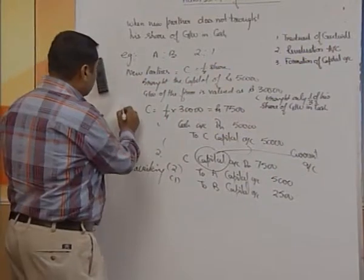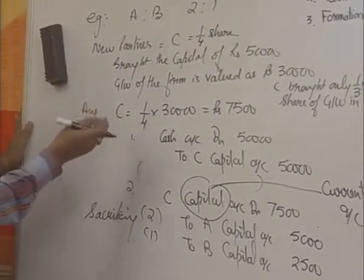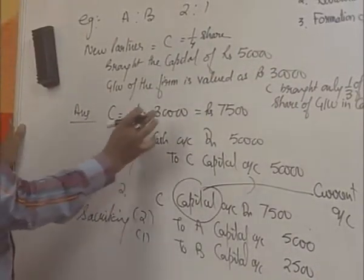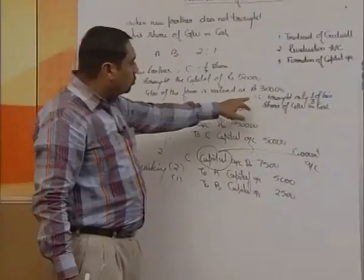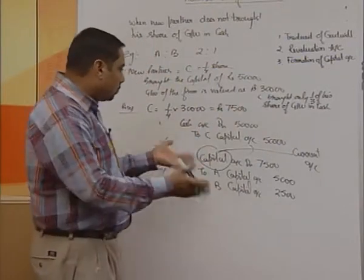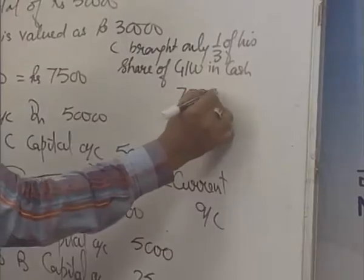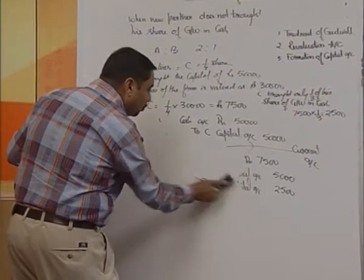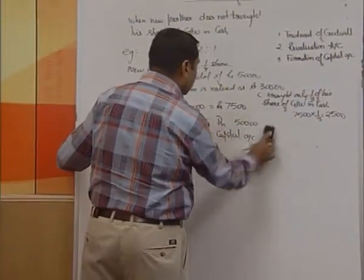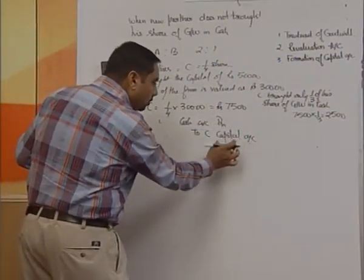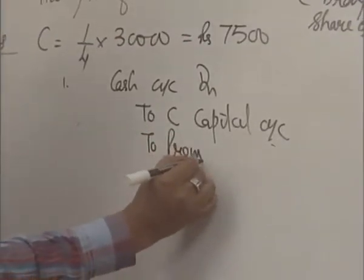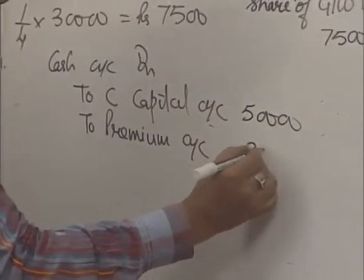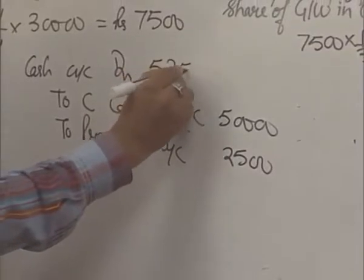The very first thing — find out what is the actual amount to be brought by C. C is going to join for one-fourth share, total goodwill is 30,000, so C was supposed to bring 7,500 as a share of goodwill. But as the question says, C brings only one-third in cash. One-third of 7,500 is rupees 2,500. So 2,500 is the cash brought by C and he was not able to bring the rest — which was 5,000. So the first entry is cash account debit to C capital account, to premium account. Premium is 2,500, capital is 50,000, total 52,500.